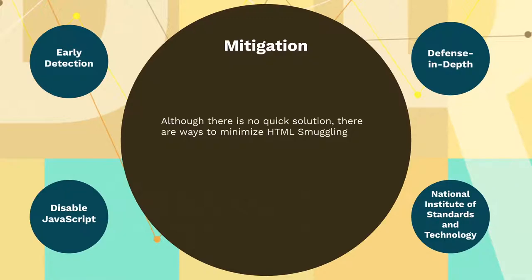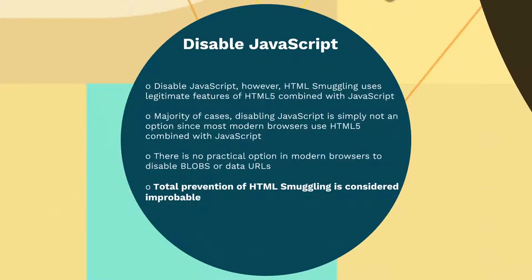Now let's explore some ways to mitigate HTML smuggling. The first effective measure is to disable JavaScript. However, HTML smuggling uses legitimate features of HTML5 combined with JavaScript. Unfortunately, disabling JavaScript is not a viable option. There really is no practical option in modern browsers to disable blobs or data URLs.